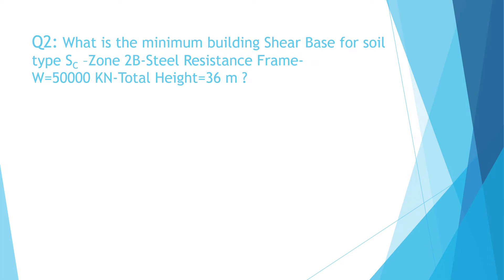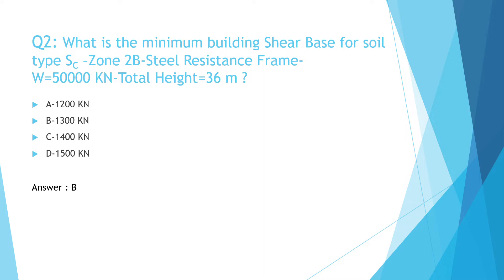Question number two. What is the minimum building shear base for soil type SC, zone 2b, steel resistance frame, W equal 50,000 kN, and total height equal 36 meters? A: 1200 kN, B: 1300 kN, C: 1400 kN, D: 1500 kN. The correct answer is B: 1300 kN. The steps of solution are shown.